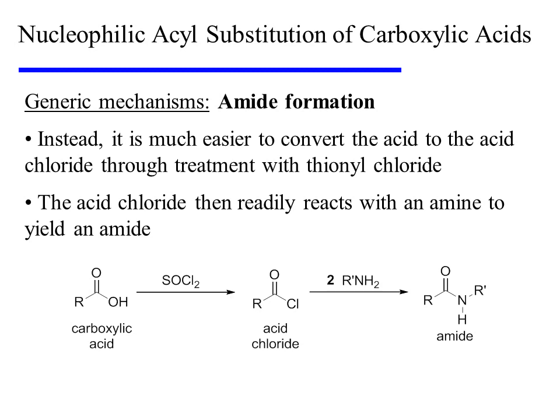Instead, it is much easier to convert the acid to the acid chloride through treatment with thionyl chloride. This much more reactive acid chloride then readily reacts with an amine to yield an amide. The mechanisms for these processes may be found in the videos on the reaction of carboxylic acids with thionyl chloride and the nucleophilic acyl substitutions of acid chlorides.